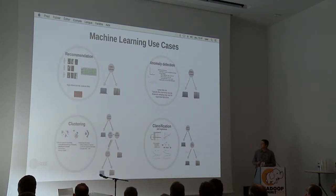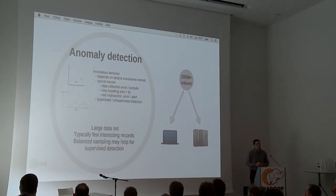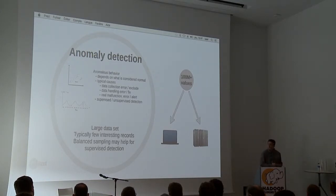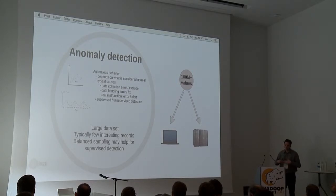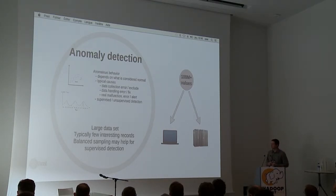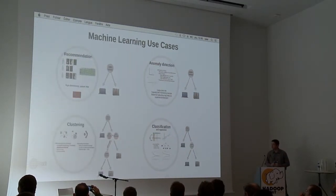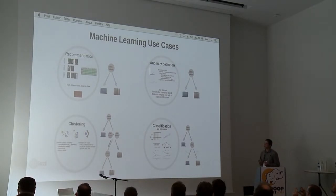Another area where the answer is quite clear is anomaly detection. When you're trying to spot strange behavior — for example fraud detection or data collection problems messing up reports — if you start to downsample you may be losing those interesting records. If you downsample a fraud dataset you may sample out fraud cases and not be able to identify them. So in most cases you should use all the data, and if it doesn't fit on a single machine, go for the large-scale implementation.